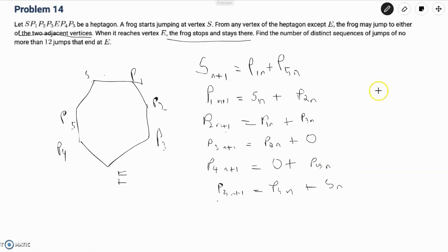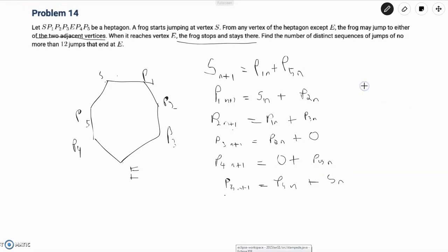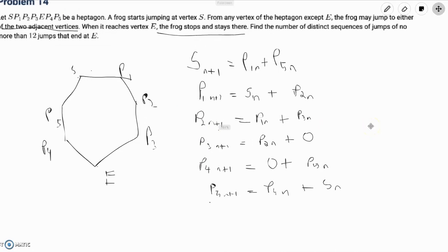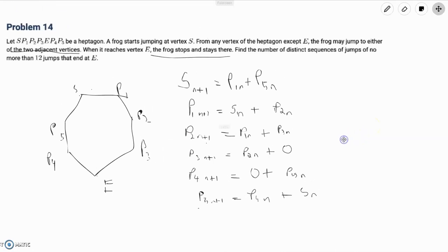Now that we've got our recursion mapped out, we can put this into an organized table and efficiently compute the answer. First, let's think about what the answer is. Normally we would be inclined to say E(12), but that's not true because the frog stops when it reaches vertex E.